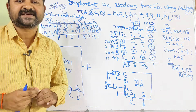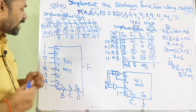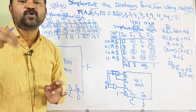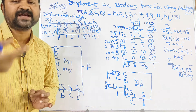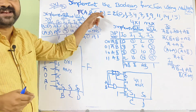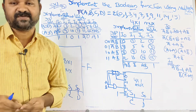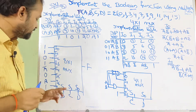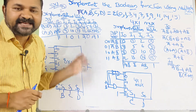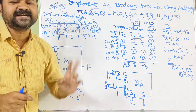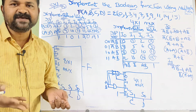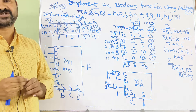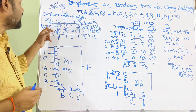The 8x1 multiplexer has 8 inputs from i0 to i7 and 1 output f. Out of the 4 boolean variables, we treat the last 3 variables b, c, d as selection variables — s2, s1, s0 correspond to b, c, d. The first variable a is taken as the input variable. We could choose any 3 variables, but here b, c, d are the selection variables.